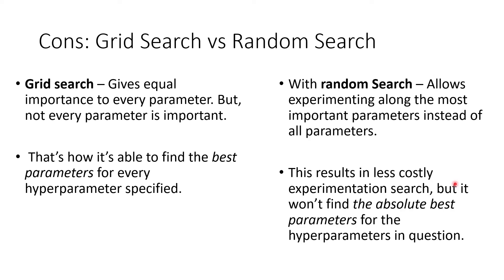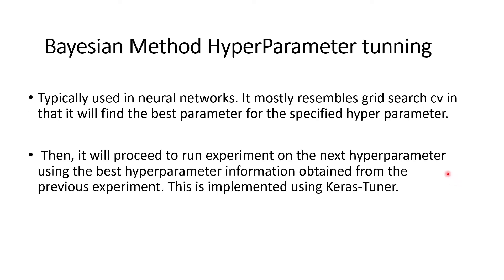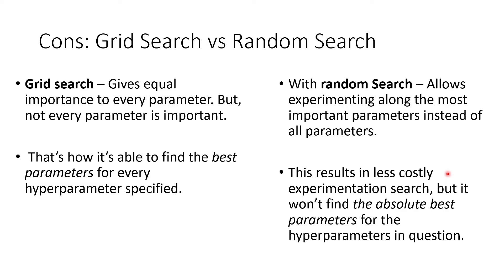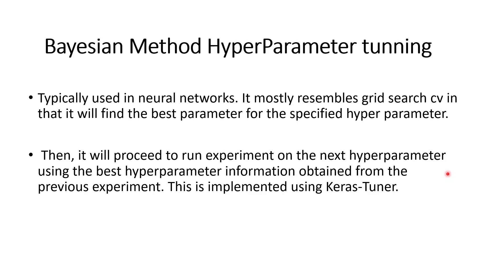Apart from Grid Search and Random Search, there's another method called Bayesian hyperparameter tuning. This is typically used with neural networks and mostly resembles Grid Search CV in that it finds the best parameter for a specified hyperparameter. But then it proceeds to run experiments on the next hyperparameter using the best hyperparameter information obtained from the previous experiment.